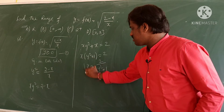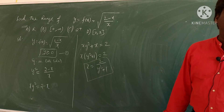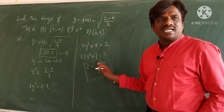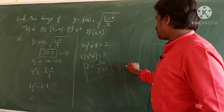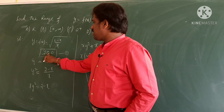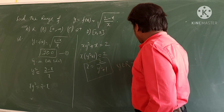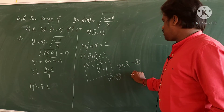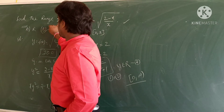Now, will all values of y satisfy this? Yes — x is defined for all real values of y since y² + 1 is never zero. So y belongs to ℝ. But our condition is y ≥ 0, so we take the intersection of these two conditions, giving the range as [0, ∞).